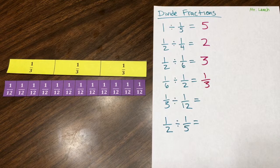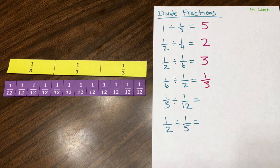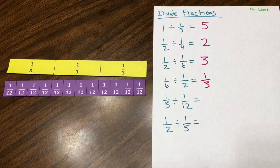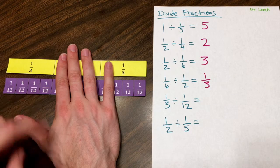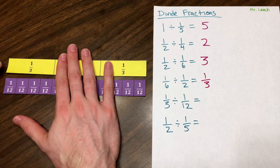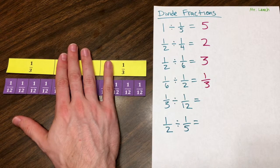What about one-third divided by one-twelfth? I'll give you a second to think about it. You can see that this one-third can be broken up into four equal units of one-twelfth, so that means that one-third divided by one-twelfth is four.